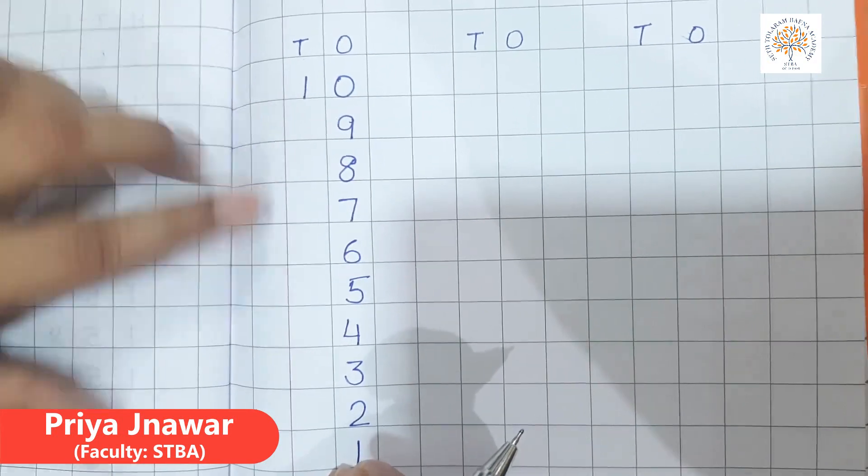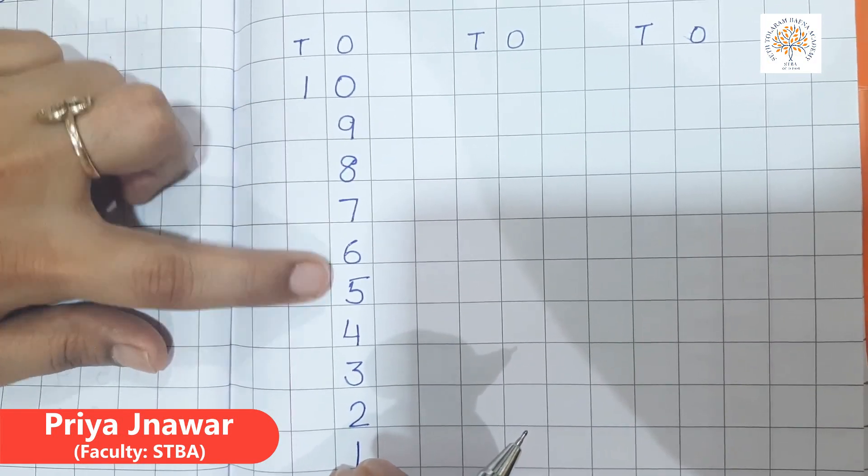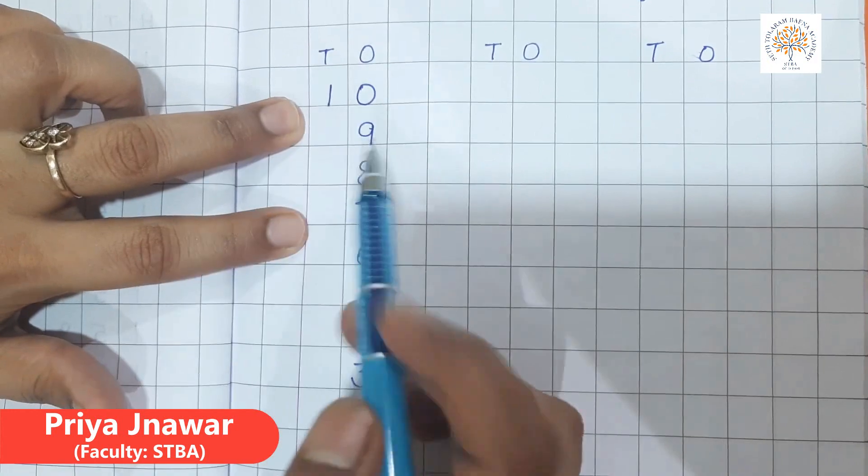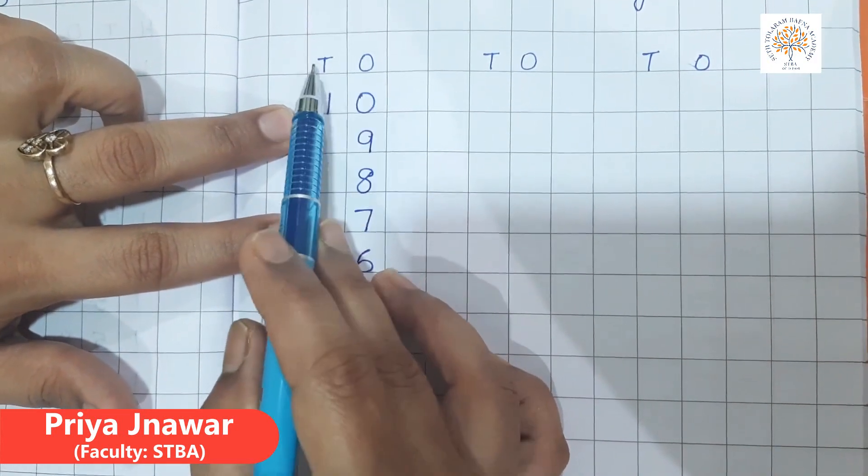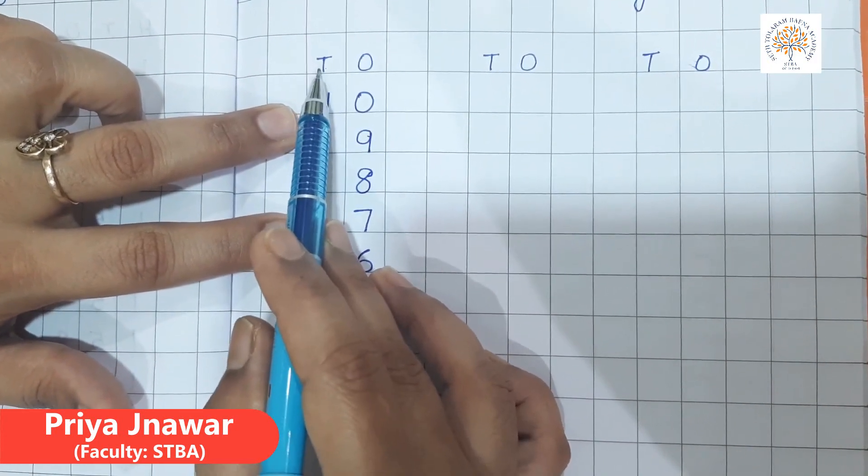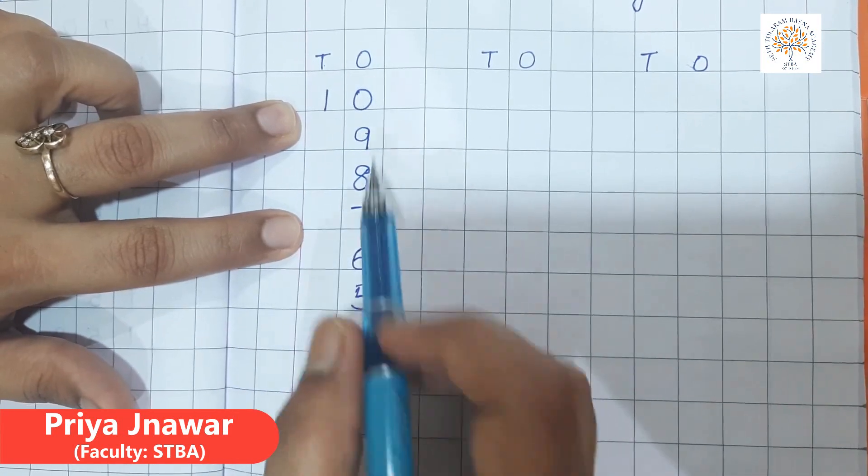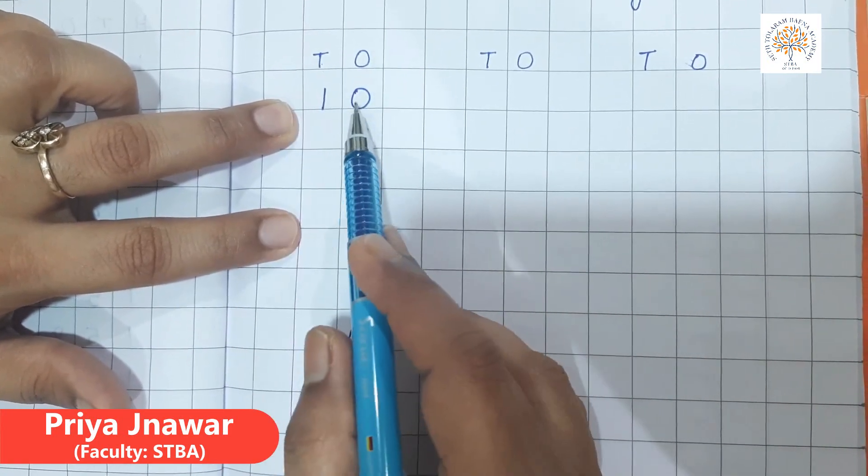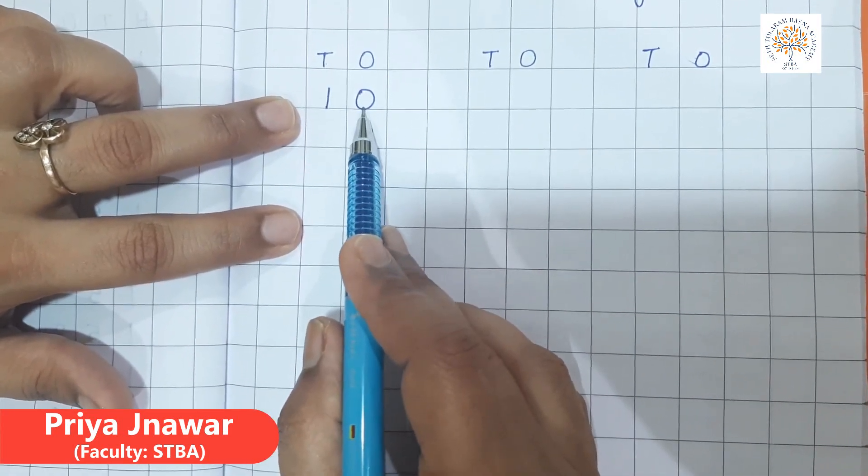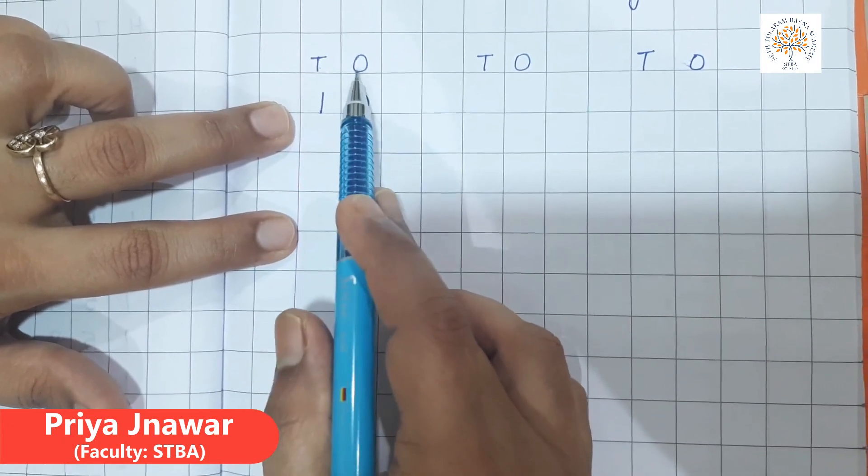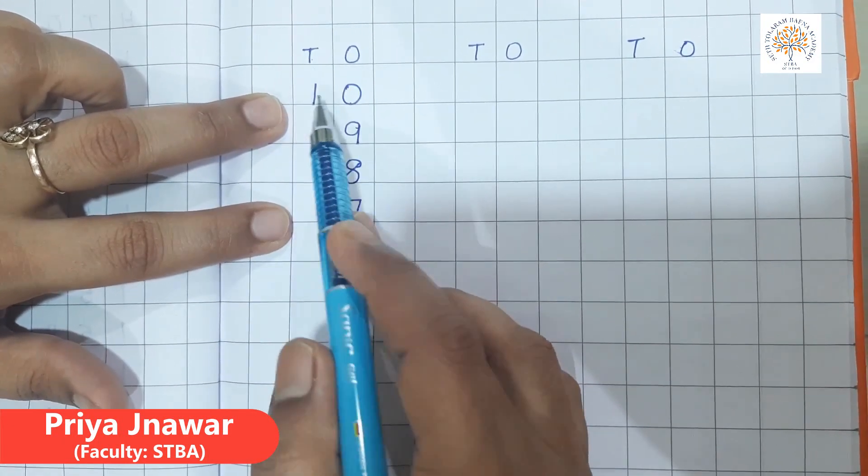10, 9, 8, 7, 6, 5, 4, 3, 2, 1. Again I am explaining you, this O means 1's and this T means 10. This is place value, 1's and 10's. That's why we have written 0 under O and 1 under T because this is 1's and this is 10's value.